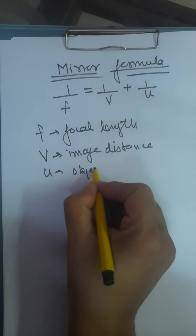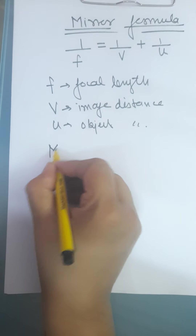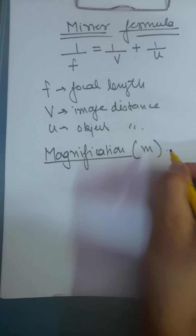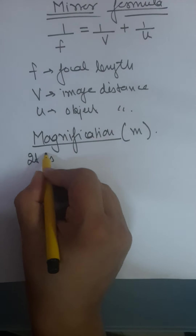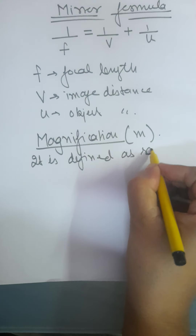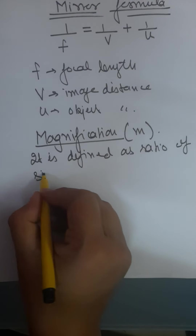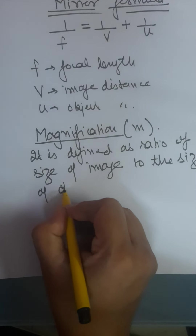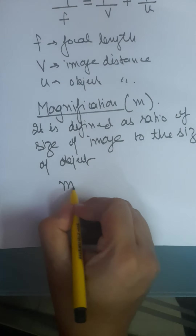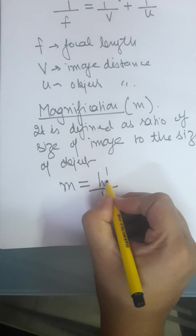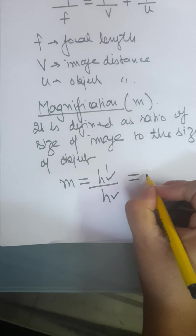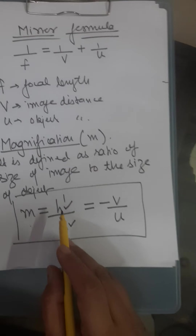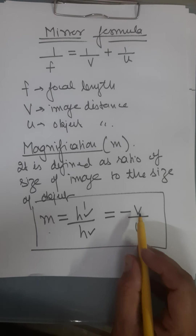Along with this, we write magnification. Magnification means to magnify. Its symbol is M. It is defined as the ratio of size of image to the size of object — that is, H dash by H, which is equal to minus V by U. So the magnification formula is H dash by H, which equals minus V by U.